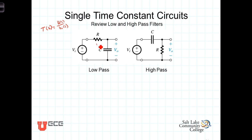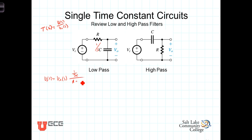Recalling that the impedance in the Laplace domain, the impedance of the capacitor is 1 over sC, we can then write using voltage divider that V_out of s is equal to V_in of s times the impedance of the capacitor, which is 1 over sC, divided by R plus 1 over sC.